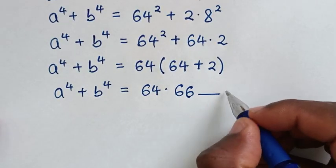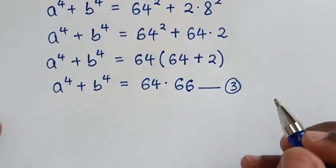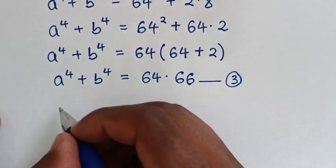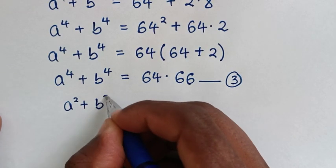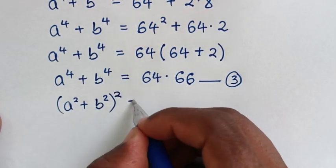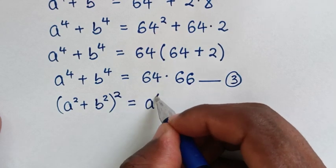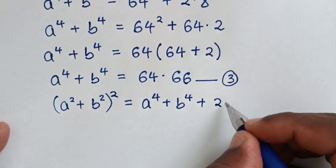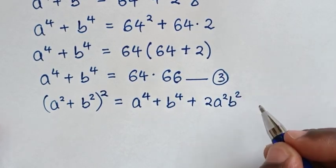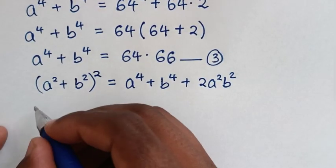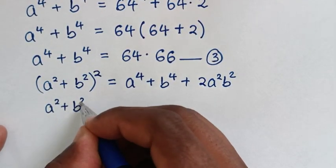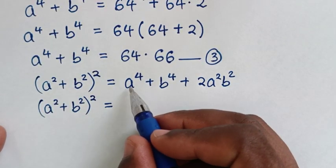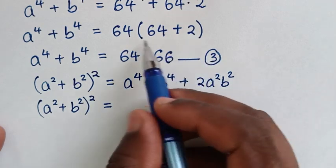In the next step, to expand a to the power 4 plus b to the power 4, we apply the bracket rule: a to the power 4 plus b to the power 4 plus 2a squared b squared. Then a squared plus b squared bracket squared equals a to the power 4 plus b to the power 4, which from equation 3 equals 64 times 66.